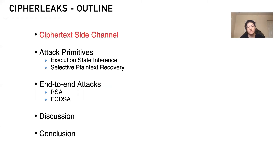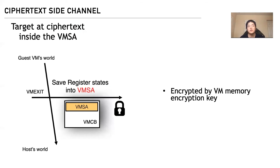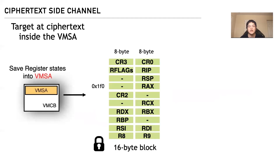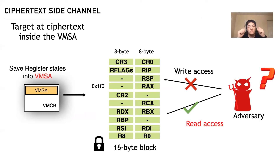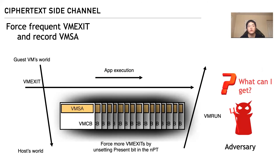The ciphertext side channel targets continuous monitoring of ciphertext inside the VMSA. When there is a VM exit, register states are encrypted and stored in the VMSA, encrypted per 16-byte block. Usually a register stores an 8-byte value, so each 16-byte block may contain two register values. However, some blocks contain only one register value — like RIP, RAX, CR2 — with the rest 8 bytes reserved. The adversary has read access but not write access to the VMSA. By forcing VM exits and recording the ciphertext inside the VMSA, the adversary can collect a sequence of ciphertexts during VM execution.